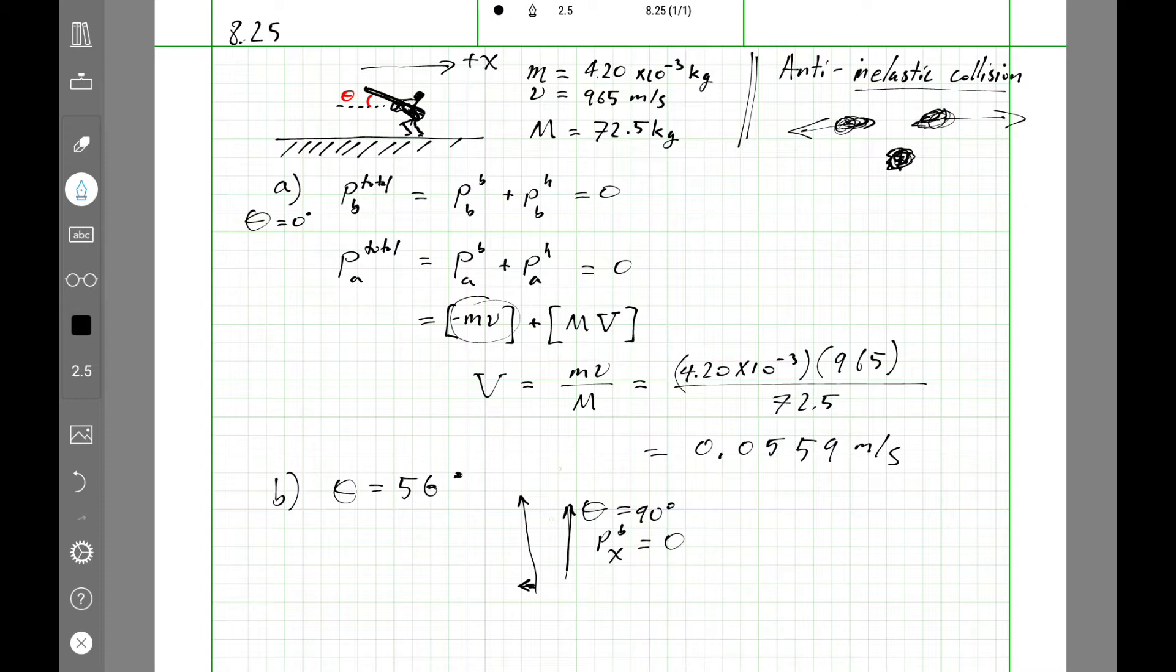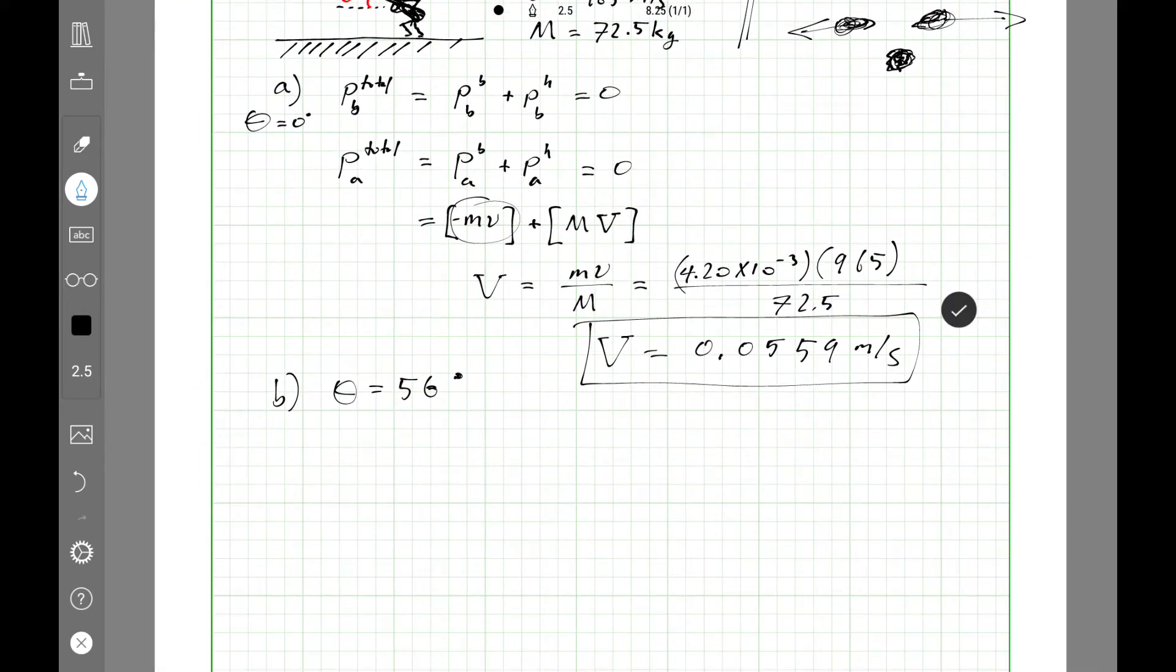And so the hunter will get pushed into the ice but not across the ice. And the recoil velocity we're looking for is this horizontal and the hunter isn't going to move in the vertical direction. So we expect the velocity, the recoil velocity, to be less than the velocity in part A.